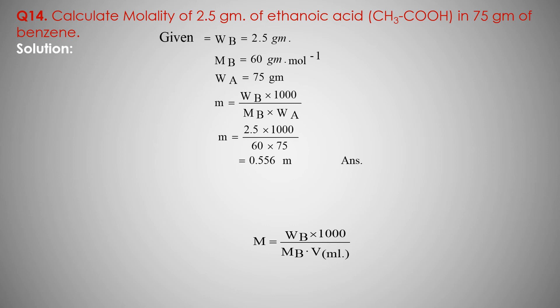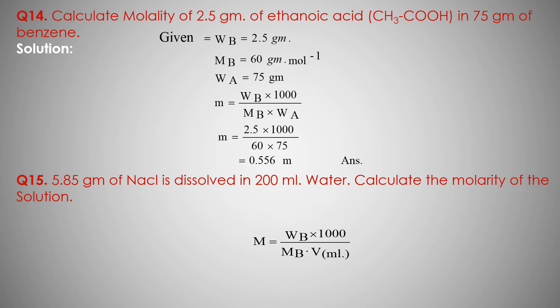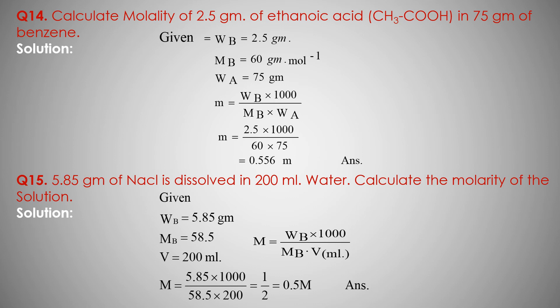Molality of solution is 0.556 — that is our answer. Question complete. Next question: 5.85 gram of NaCl is dissolved in 200 milliliter water. Calculate the molarity of the solution. Mass of solute NaCl is 5.85 gram, volume of solution is 200 milliliter.